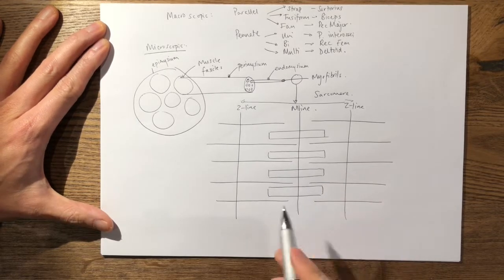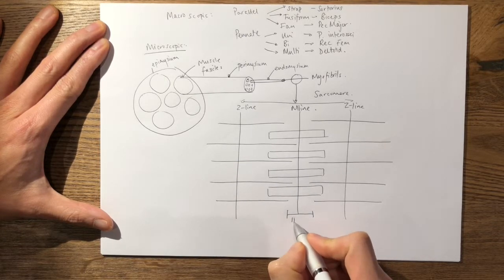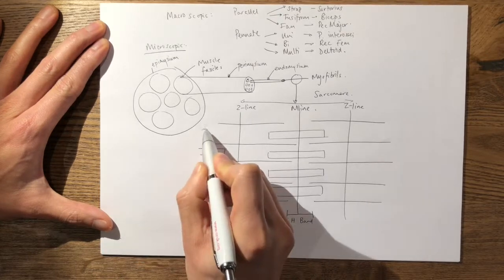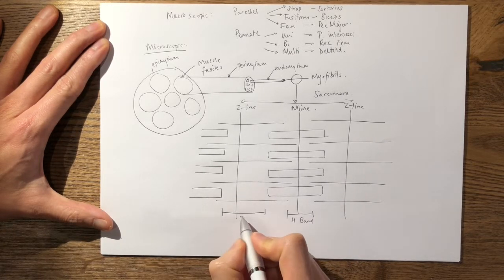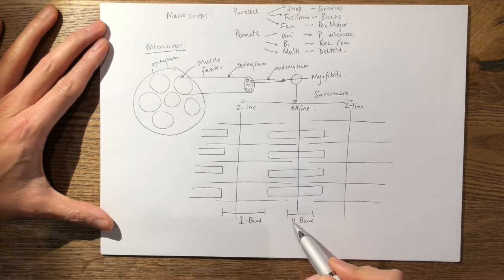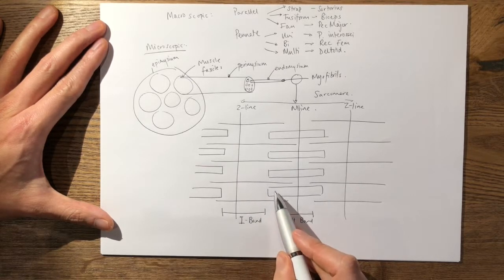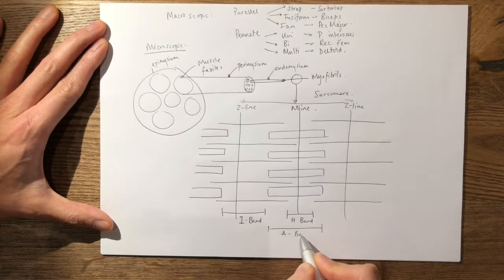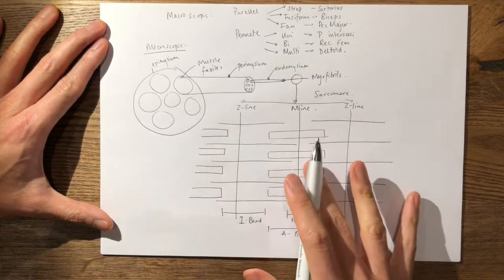You can then label the other bands. Where you have myosin only, that is your H-band. Where you have actin only, that is your I-band. The way to remember this is that myosin is thick so the letter H is thicker than the letter I. Where you have both actin and myosin together, this is your A-band — A stands for 'all', as it includes both actin and myosin.